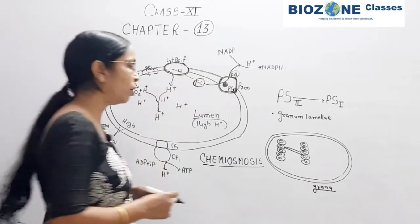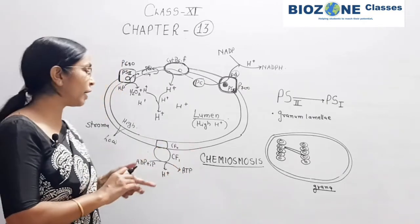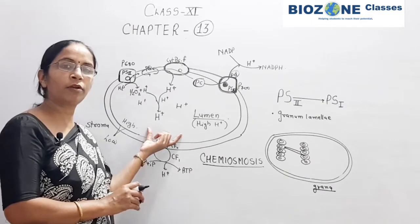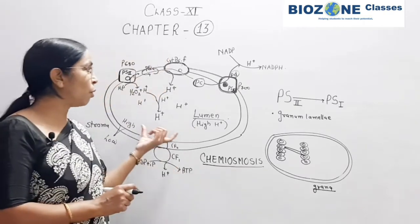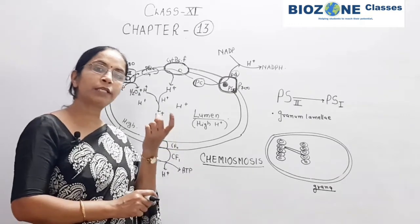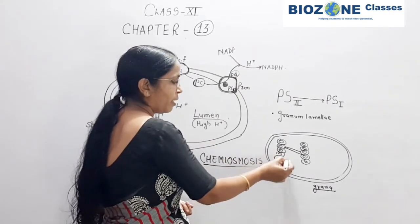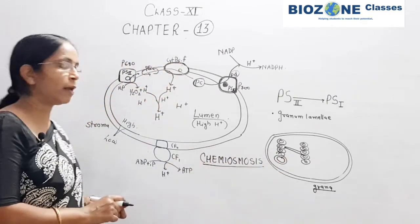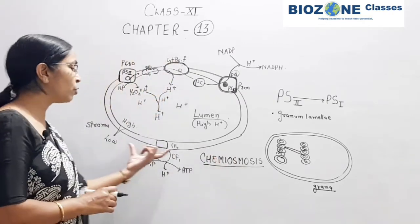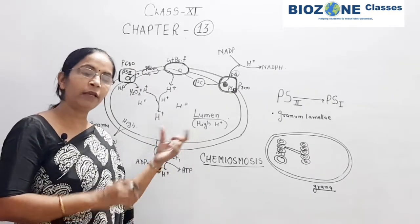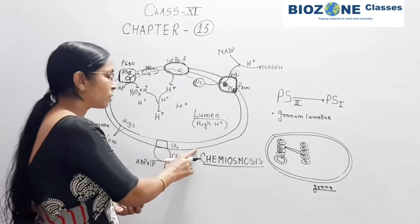Most students are confused and assume the diagram for electron transport and ATP synthesis is the diagram for the entire chloroplast — but remember, this is not the diagram for the chloroplast. This is a single granum lamellae. We use only this single granum lamellae structure to explain the chemiosmosis theory.